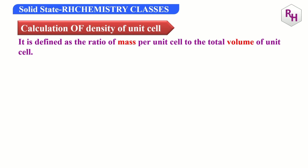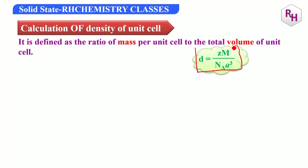Remember, density is nothing but the ratio of mass per unit cell to the total volume of the unit cell — density is mass by volume. The density formula is: density equals ZM divided by NA into A cube. Density is equal to ZM divided by A cube into NA.